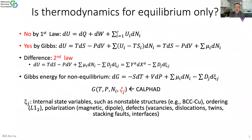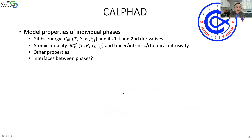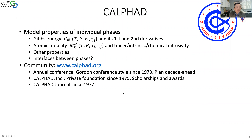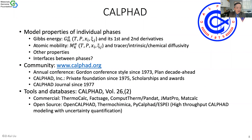The internal degree of freedom — we call these internal state variables — could be many: long-range order structures, phases, copper ordering, polarization, defects. So it's very broad and covers everything not covered by equilibrium states. CALPHAD models the thermodynamics of individual phases, atomic probabilities, and other properties, even interfaces between phases. We have a community with an annual conference — the next one's in Boston in June. We have a nonprofit foundation that provides scholarships and awards, a journal since 1977, tools and databases. Commercial databases and tools are broadly used by industry, and open source tools are also now being used by industry.